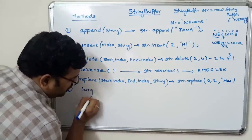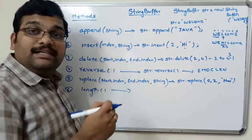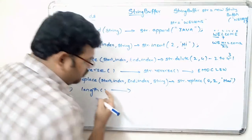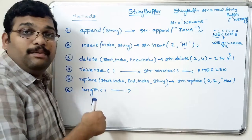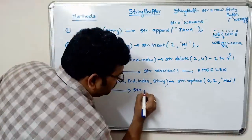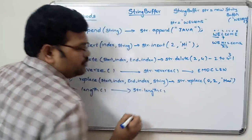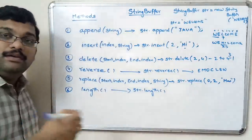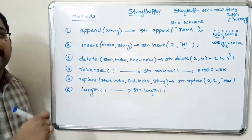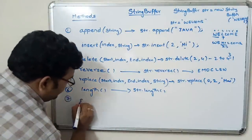As usual, we know the length() method, which returns the length of the given string. There is no parameter and the result will be in integer format. So str.length() will return an integer — the length of the given string.